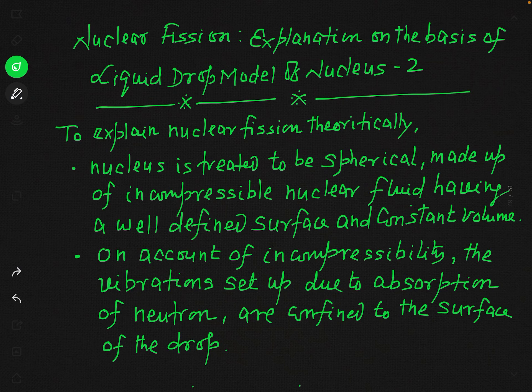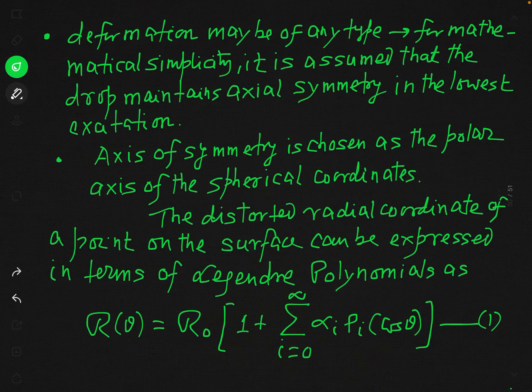To treat the problem theoretically, we treat the nucleus as initially spherical — that is, before the projectile strikes it. We assume the nucleus is made up of incompressible nuclear fluid having a well-defined surface and constant volume. This is the key assumption of the liquid drop model.